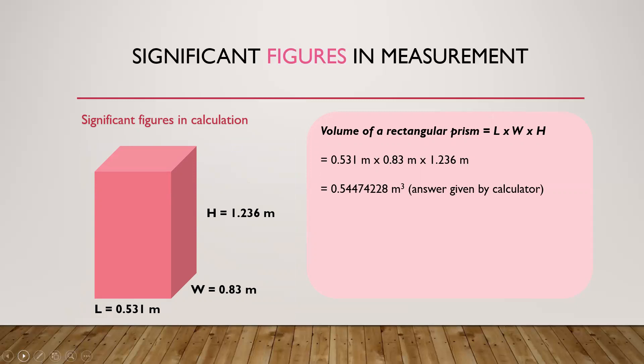So, we must round off the final answer so that there are only two significant figures, that is, make it no more precise than the least precise measurement given: the width of the prism, which only has two significant figures. The value we record for the volume of the prism is therefore 0.54 cubic meters.